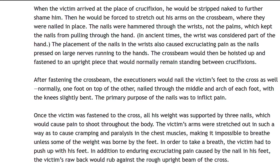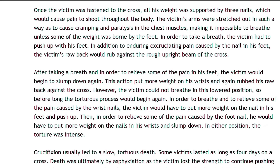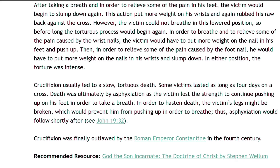The crossbeam would then be hoisted up and fastened to an upright piece that would normally remain standing between crucifixions. After fastening the crossbeam, the executioners would nail the victim's feet to the cross as well, normally one foot on top of the other, nailed through the middle and arch of each foot, with the knees slightly bent. The primary purpose of the nails was to inflict pain. Once the victim was fastened to the cross, all his weight was supported by three nails, which would cause pain to shoot throughout the body. The victim's arms were stretched out in such a way as to cause cramping and paralysis in the chest muscles, making it impossible to breathe unless some of the weight was borne by the feet. In order to take a breath, the victim had to push up with his feet. In addition to enduring excruciating pain caused by the nail in his feet, the victim's raw back would rub against the rough upright beam of the cross. After taking a breath, the victim would begin to slump down again. This action put more weight on his wrists and again rubbed his raw back against the cross.